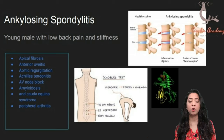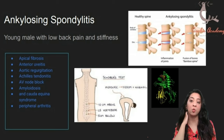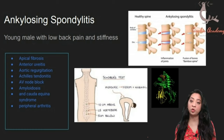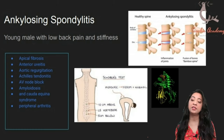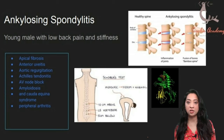For PLAB 1 that's all you need to know about ankylosing spondylitis. For the curious, treatment options are similar to rheumatoid arthritis — NSAIDs and exercise as well as disease-modifying drugs and biologics.